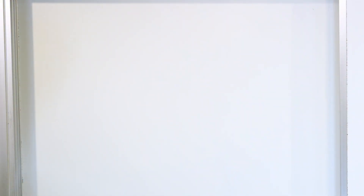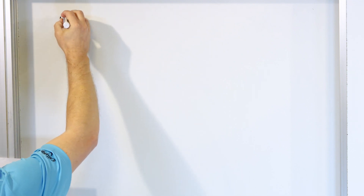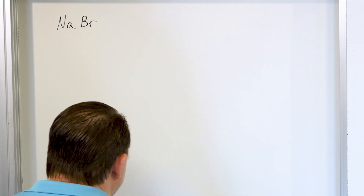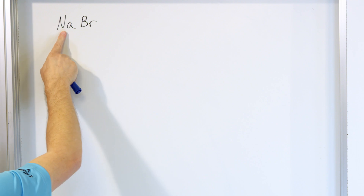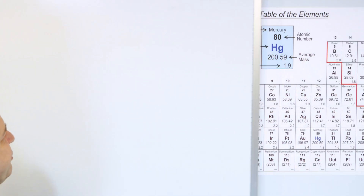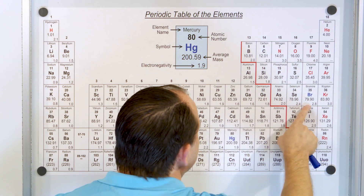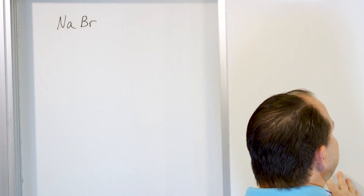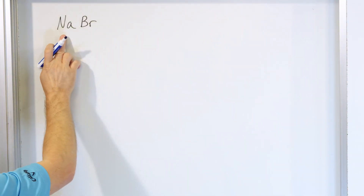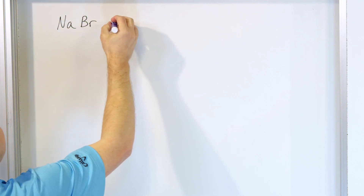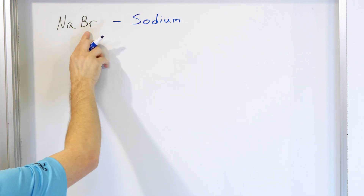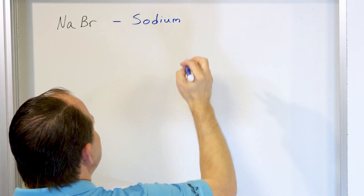Sodium chloride is the one that everybody knows. Let's go and solve a few more to see how to handle them. Let's take a look at NaBr. How do we name this? Well, this is an ionic compound because sodium is a metal and bromine is a non-metal. Sodium is on the left, bromine is on the right, so they are going to form an ionic compound. Just like sodium chloride, the first element is just written as its name — sodium, no changes — and bromine becomes bromide.